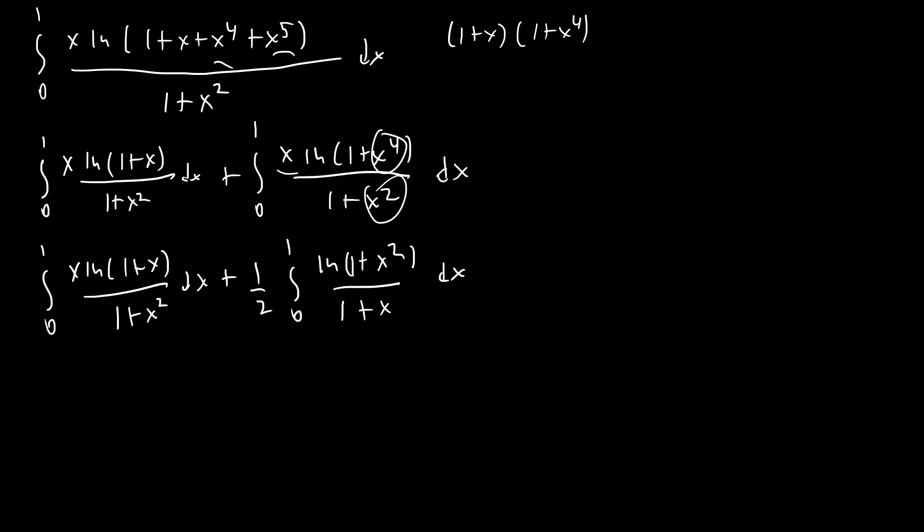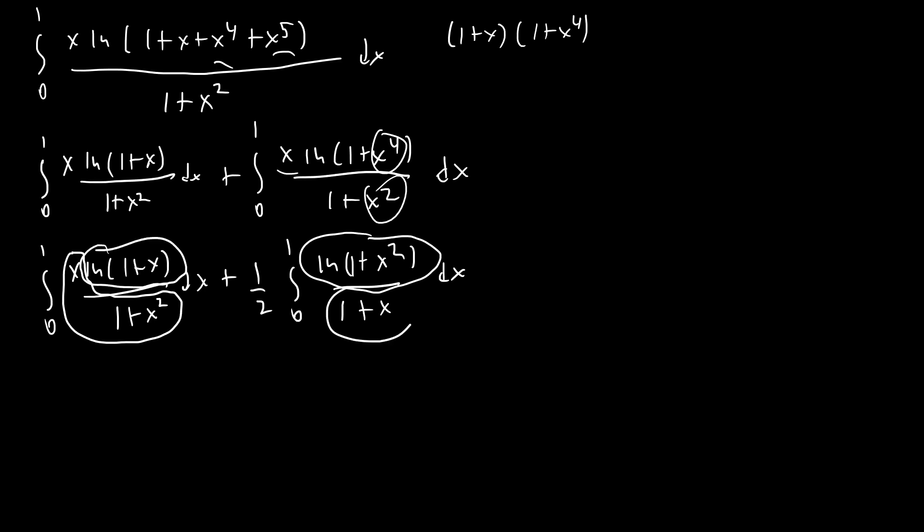This is where the interesting part shows up — each of these integrals by themselves is very difficult to evaluate, and I spent a long time trying to solve them separately, thinking that was the intended approach. But the key insight is to look at the context of the problem: we were asked to solve the sum of these two integrals, not each individually. That leads us to see that x/(1+x²) lines up with ln(1+x²), and ln(1+x) lines up with (1+x).